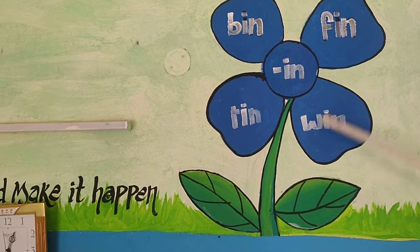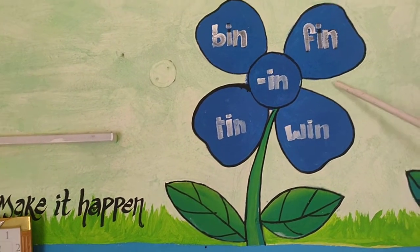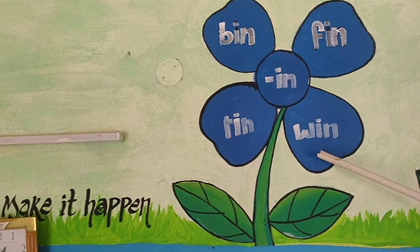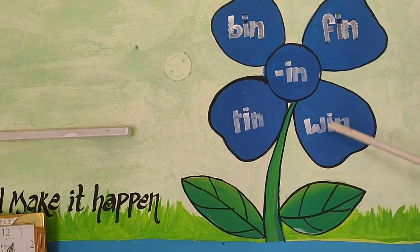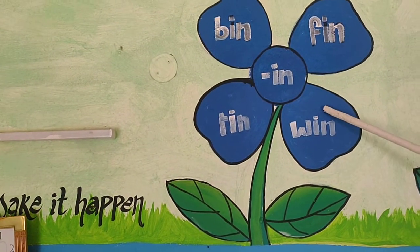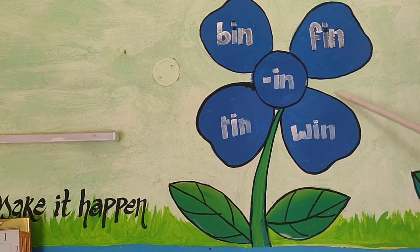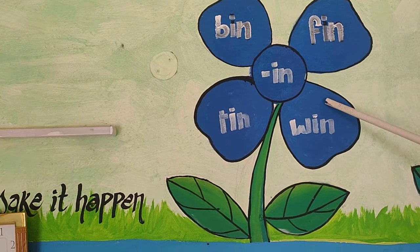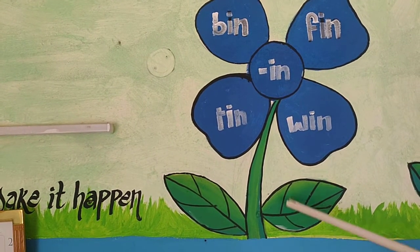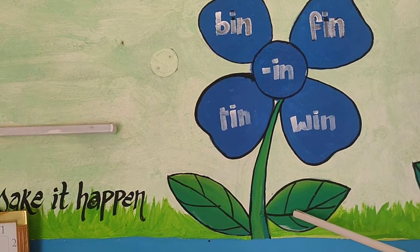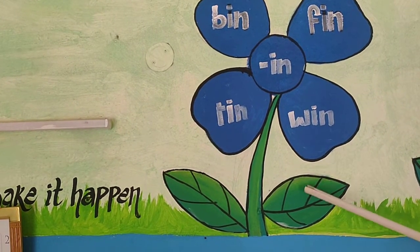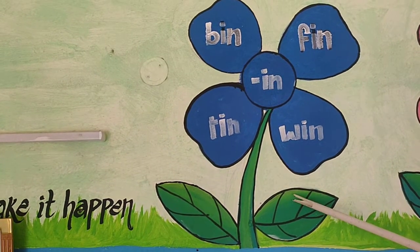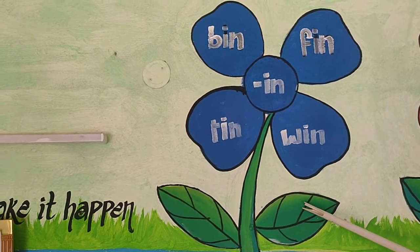Now, let us see the picture. E picture chhodani? In which colour this flower? This flower is blue in colour. The leaves are green in colour.